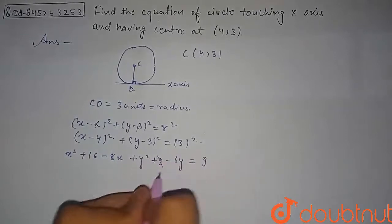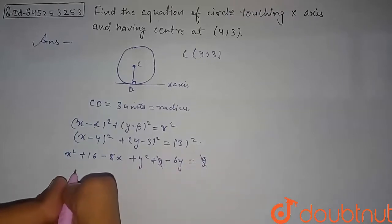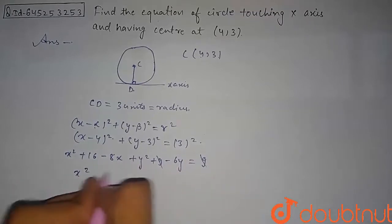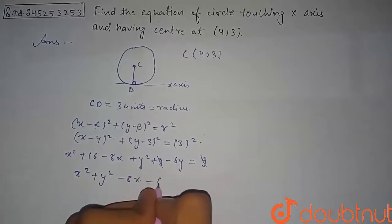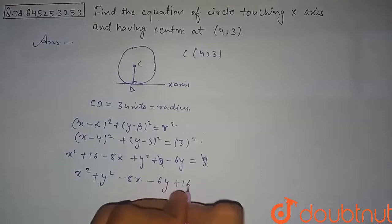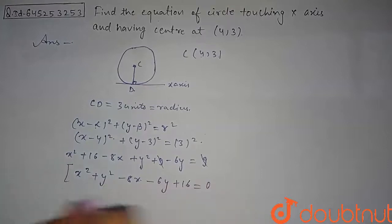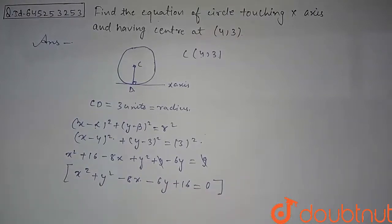So if we cancel this 9 with this 9, we get our circle equation is x² plus y² minus 8x minus 6y plus 16 equal to 0. So basically this is the answer to this question, that is equation of required circle. Thank you.